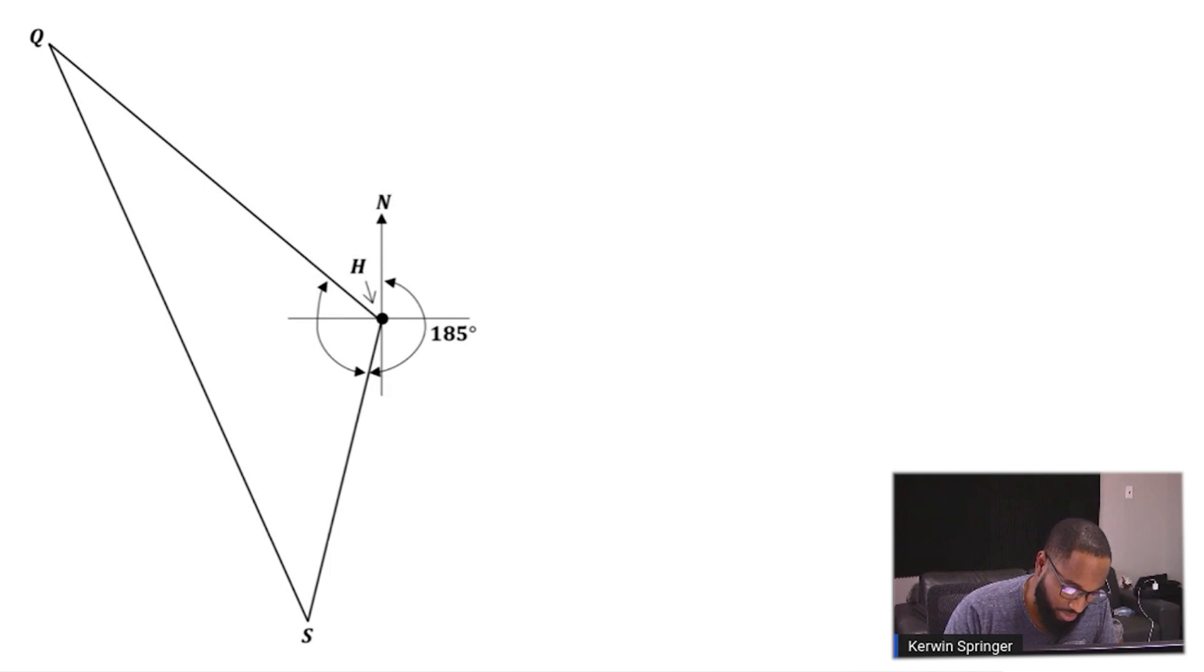That's the bearing of Q from H. The key is the word 'from'. The term that comes after 'from' is where you're starting from, the H. So 311 degrees we're going to put here, and 185 degrees here.